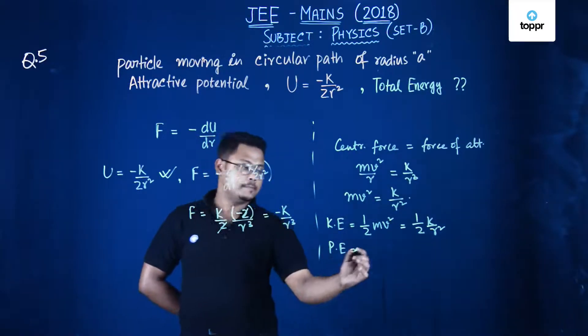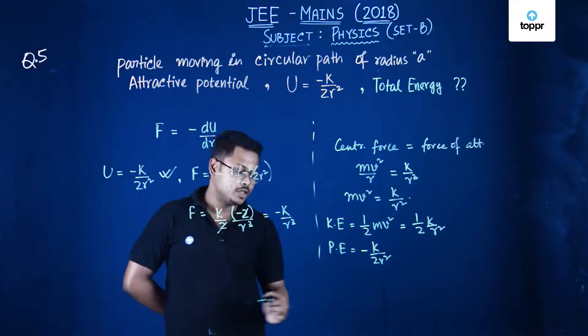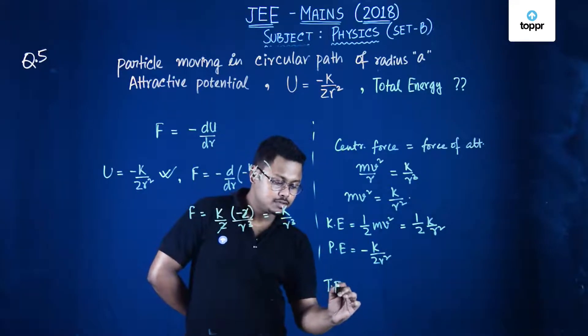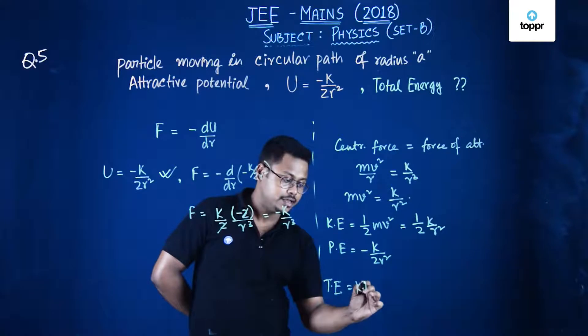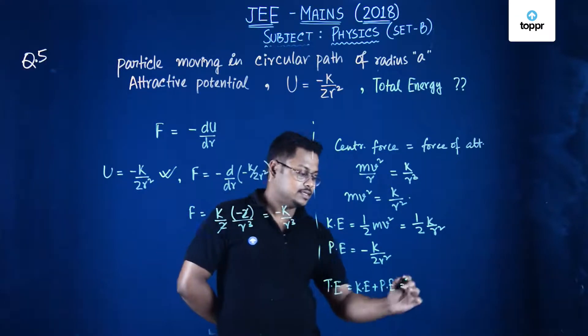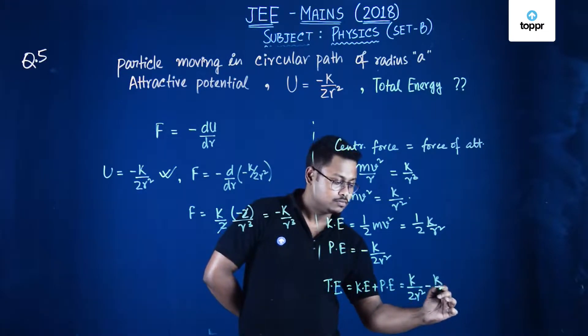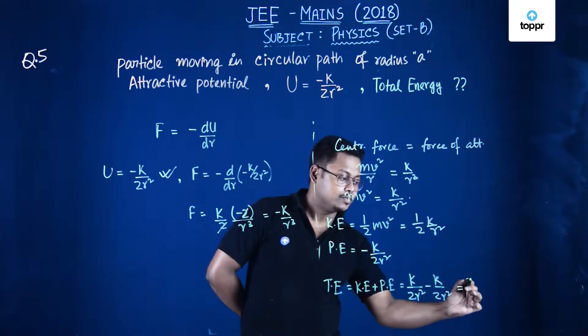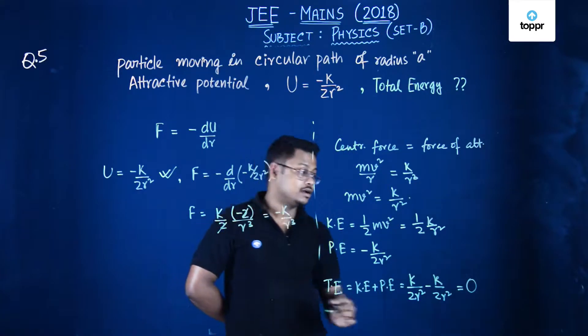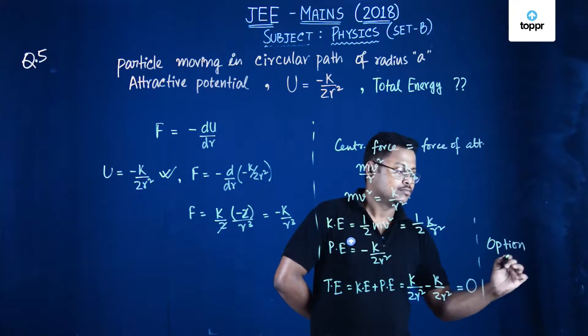So total energy will be equals to kinetic energy plus potential energy, that is k upon 2r square minus k upon 2r square and it will be 0. So the correct option is option 1.